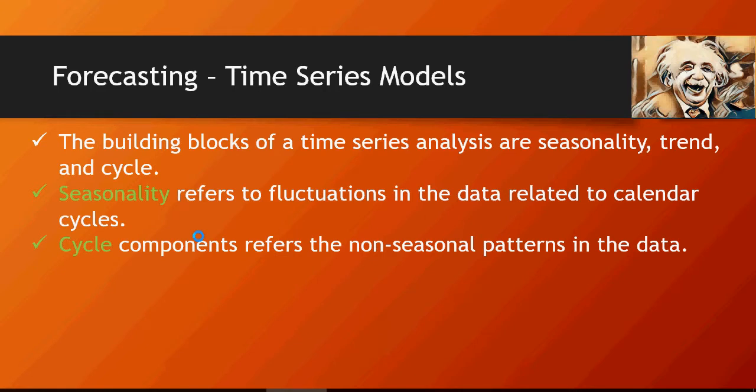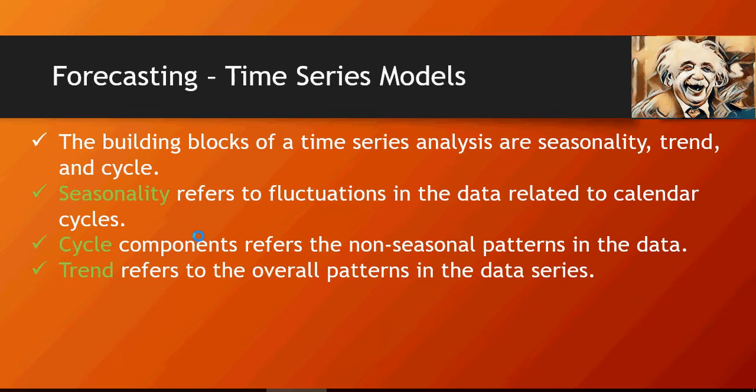Cycle refers to non-seasonal patterns in the data. So for example, the sale of an iPhone 4 has obviously gone down which is not a seasonal data because the newer version has come into market. So anything related to non-season data or patterns in the data is cycle component. And trend refers to overall patterns in the data series which is a combination of cyclic and seasonality.